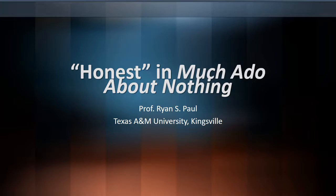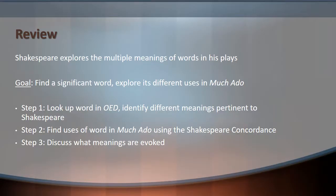In this lecture, I'm going to examine how the word 'honest' is used in Much Ado About Nothing, building on the information we found using the Oxford English Dictionary and the Shakespeare Concordance. Shakespeare's language is very rich in its meaning. He's always playing with the multiple connotations that a word might have. Our goal is to explore how one word can evoke different meanings in a particular passage and how that enriches our understanding of the play — to find a significant word and explore its different uses in Much Ado About Nothing.